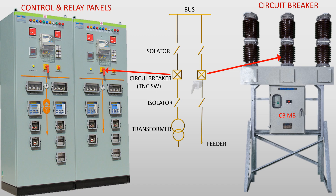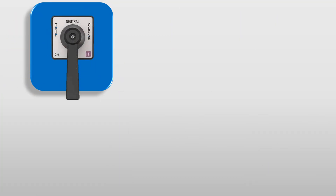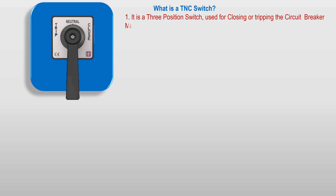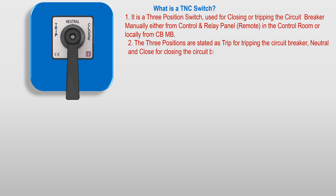A TNC — trip neutral closed switch — which is incorporated with the control panel, can make the circuit breaker on and off manually. The TNC switch is a three-position switch used for closing or tripping the circuit breaker manually, either from the control and relay panel remotely in the control room or locally from the circuit breaker mechanism box. The three positions are: trip for tripping the circuit breaker, neutral, and close for closing the circuit breaker.